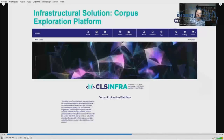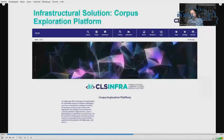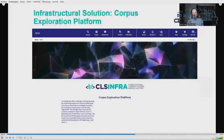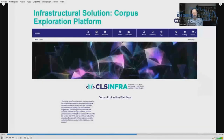The infrastructural solution is a so-called Corpus Exploration Platform (CEP), whose main function is to provide an exhaustive catalogue of literary textual resources available online in the spirit of open science. CEP is being constructed as an instance of the open-source knowledge management system ResearchSpace, which the British Museum has made available to numerous digital humanities projects.